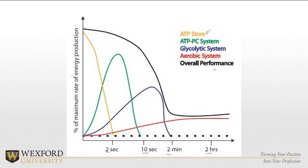Keep this in mind — you might want to revisit this slide as we put everything together. So: short duration, high intensity covers roughly these first two systems; intermediate duration in the middle; and long duration, low intensity is the aerobic system.